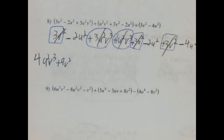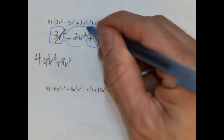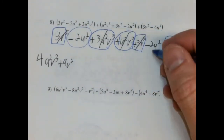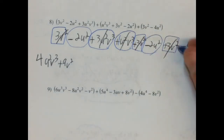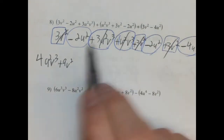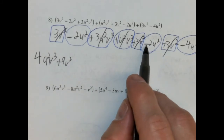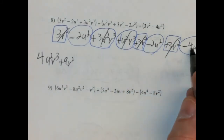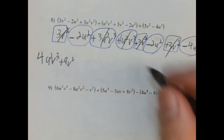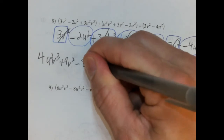I see some u squareds: negative 2u squared, negative 2u squared, negative 4u squared. So negative 2 minus 2 is negative 4, and negative 4 minus 4 is negative 8. So negative 8u squared.